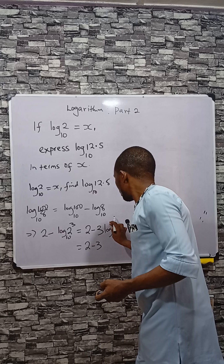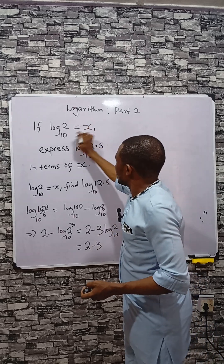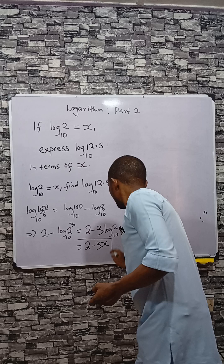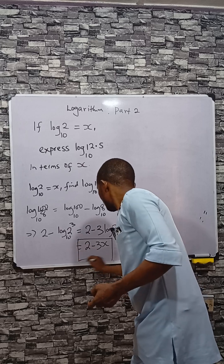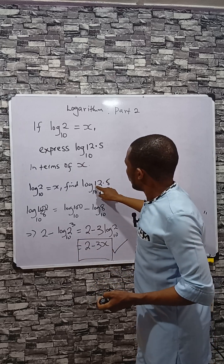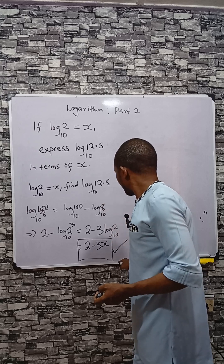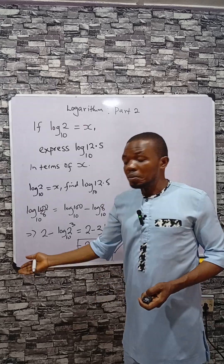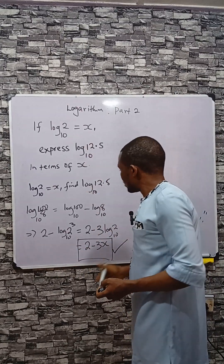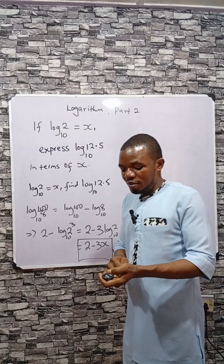That gives 2 minus 3X, since log 2 base 10 is X — very simple. So instead of looking for 125 divided by 10 to find the log, you can just apply this method to find the answer very fast. Bye bye!